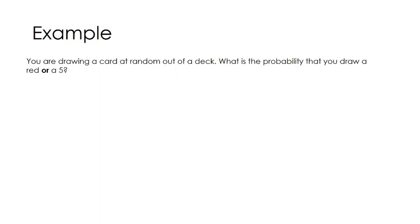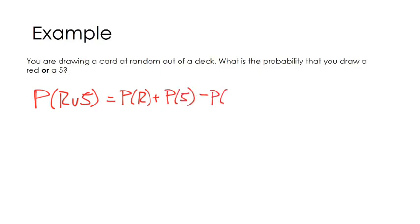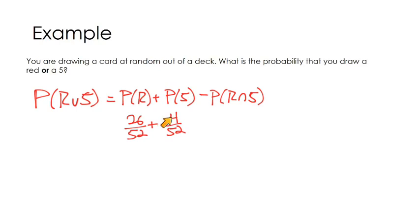Now, drawing a card at random from a deck — what is the probability that you draw a red card or a 5? Try this one on your own first. The probability of red or 5 equals the probability of drawing a red card, plus the probability of drawing a 5, minus the probability of drawing a red 5. There are 26 red cards out of 52 total — diamonds and hearts each have 13 cards — so basically a 50-50 chance of getting a red card. There are 4 fives out of 52, one for each suit.